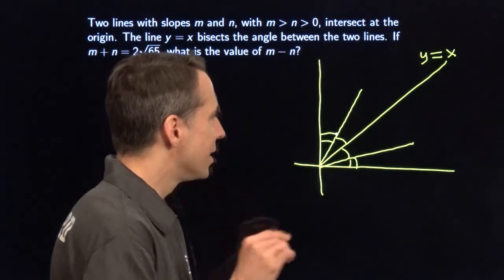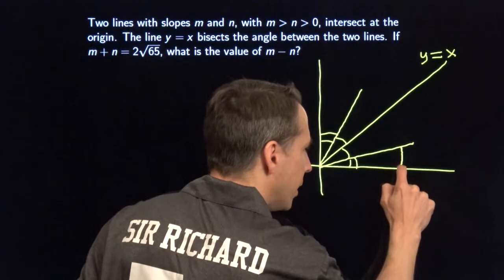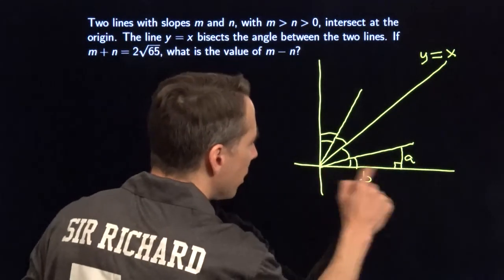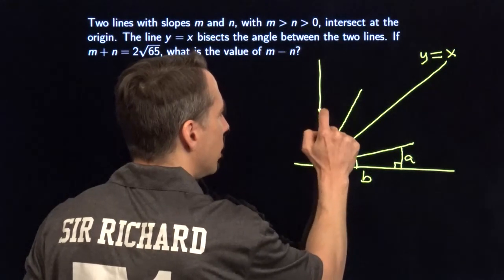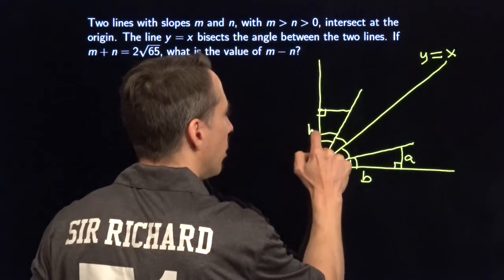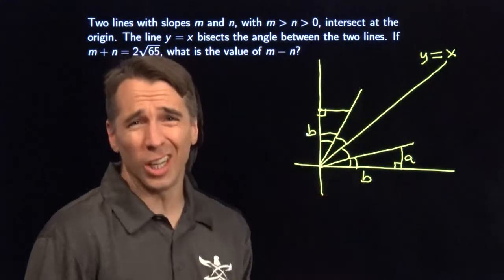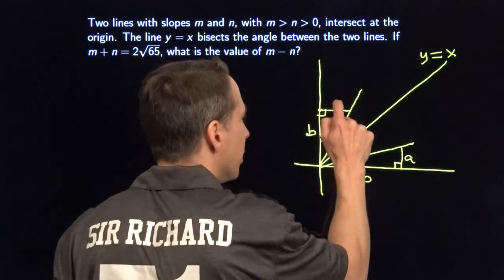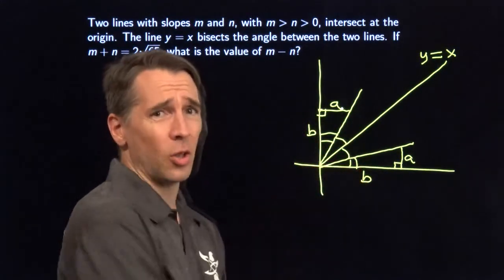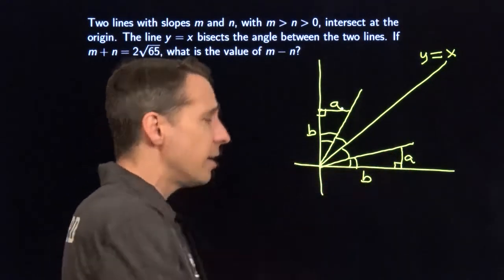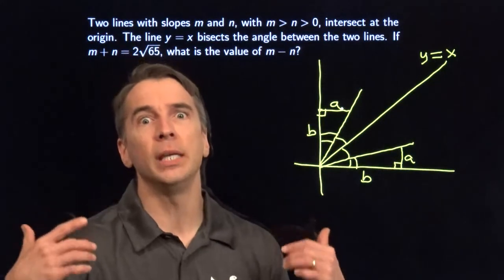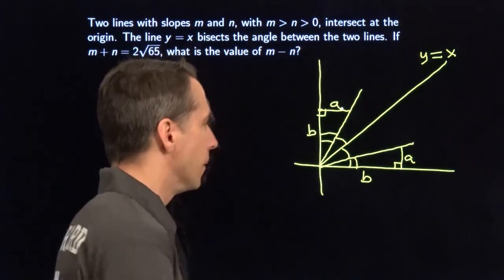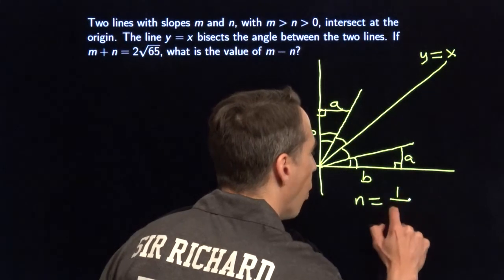I see something interesting now. Check this out. Let's say I drop a little altitude out here, like this. We say this is a and this is b. Then we do the same thing over here — go up by b and go over. Now look at these two right triangles. These two triangles have angle-side-angle, so they're congruent. So this has to be a. The slope of this line: the rise is a, the run is b, so the slope is a over b. The slope of that line is b over a. So m and n are reciprocals. I'm going to write that down right away: n is 1 over m.